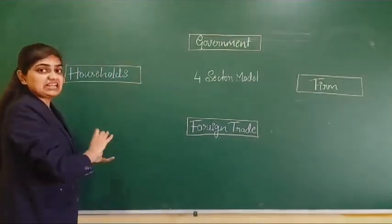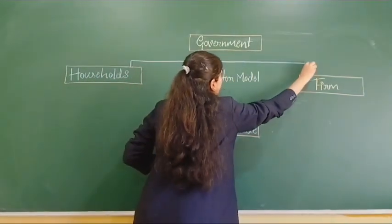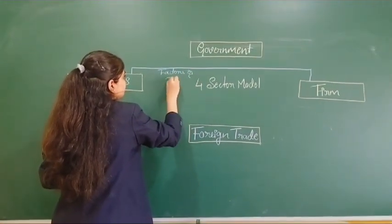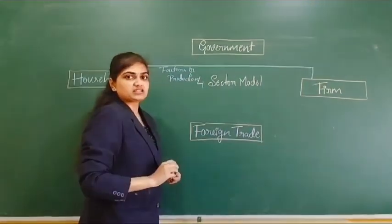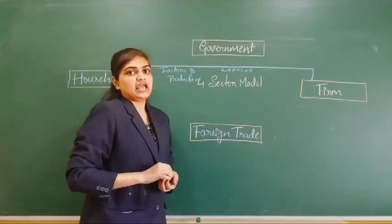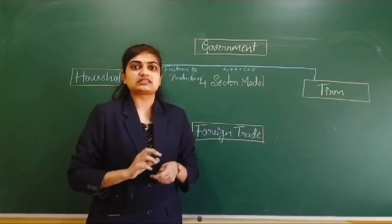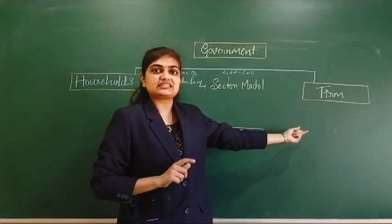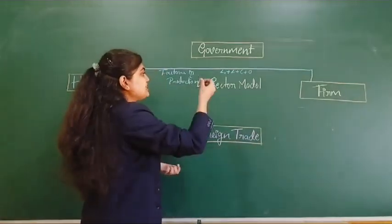The activity starts with households. Households will send factors of production to the firms. What are the factors of production? There are four factors of production: land, labor, capital, and organization. If any individual is having land, after using it for personal use, if they have excess land, they just supply it to business. Business will utilize it — they may sell the land or give it for rent.